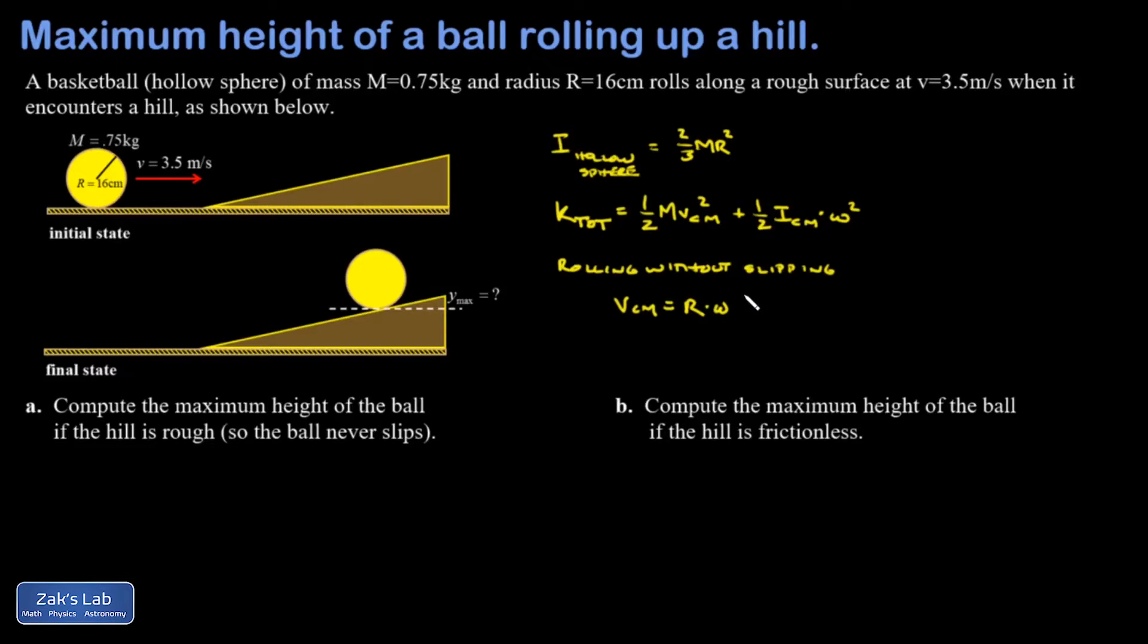It's a very familiar formula but it means something different than the old v equals r omega for the tangential velocity at the edge. This is actually the translational velocity of the center of mass that happens to be related by the exact same thing r omega. We're going to use this to substitute for omega at one point in the problem, so let me just solve for it right now.